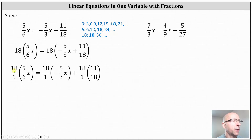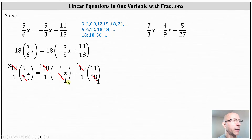Looking at the left side of the equation, notice 18 and 6 share a common factor of 6 — there is one 6 in 6 and three 6s in 18, or simply 18 divided by 6 is 3. On the right side, 18 and 3 share a common factor of 3 — there is one 3 in 3 and six 3s in 18, or 18 divided by 3 is 6. For the last product, 18 and 18 share a common factor of 18 — 18 divided by 18 is equal to 1.